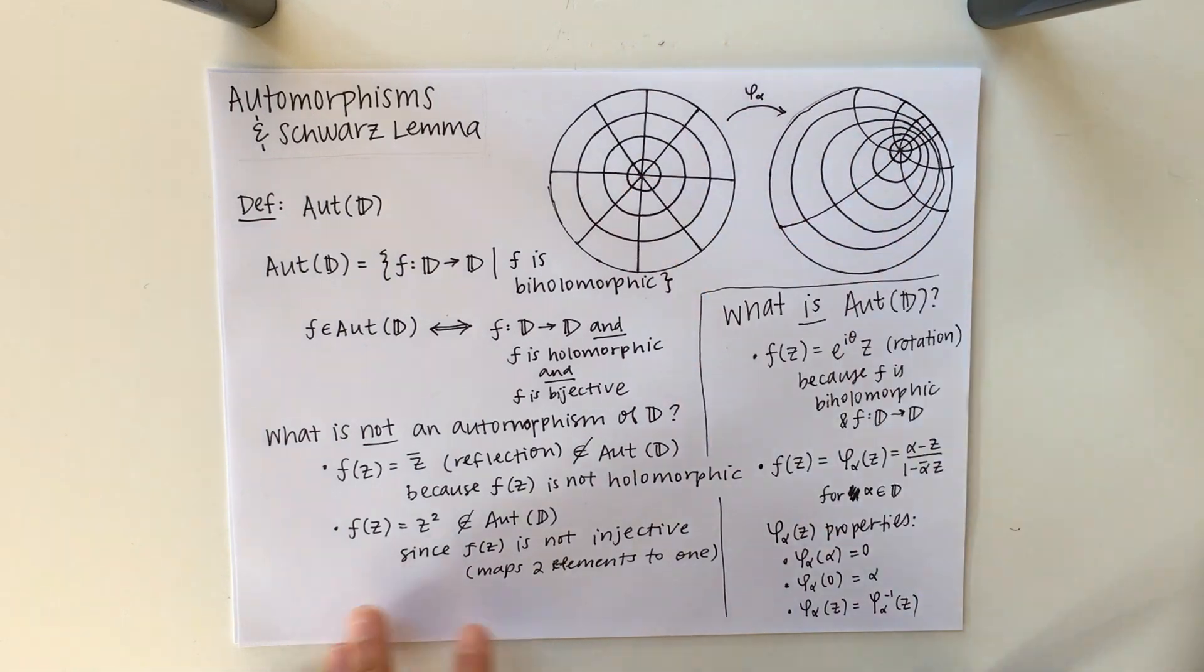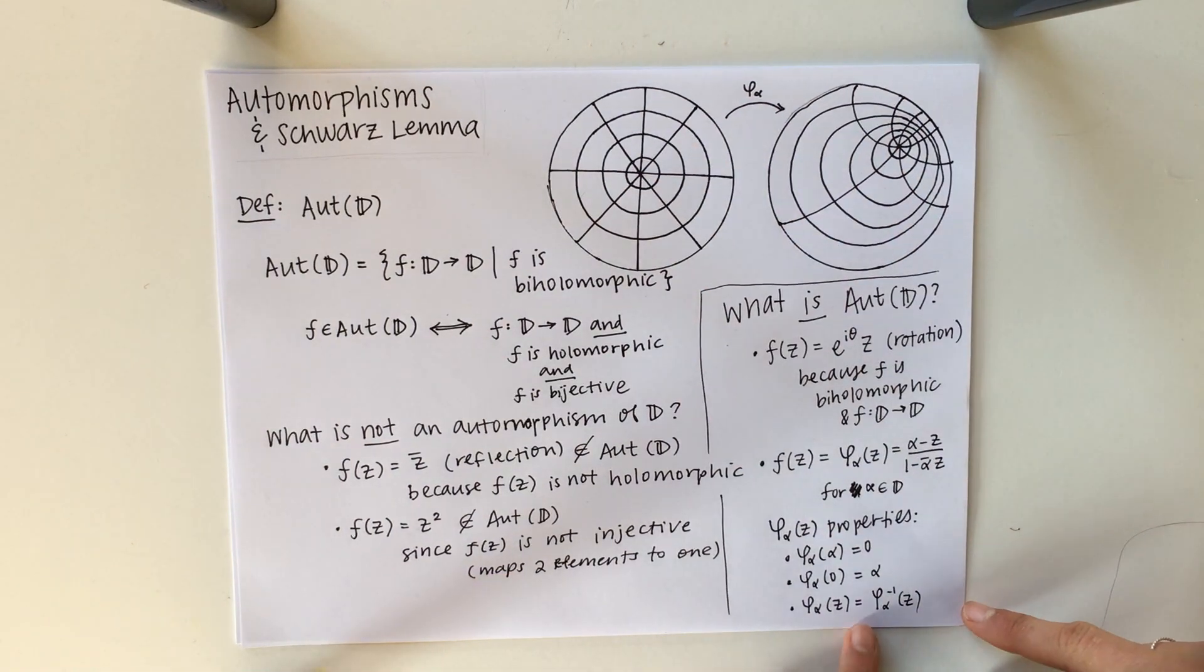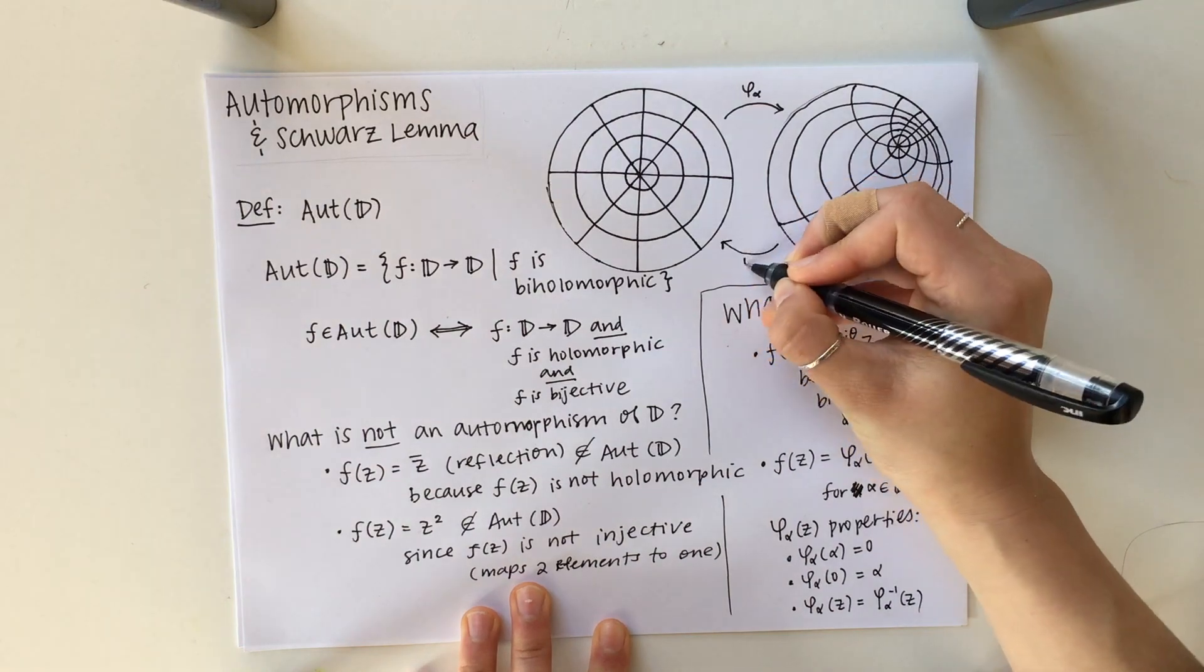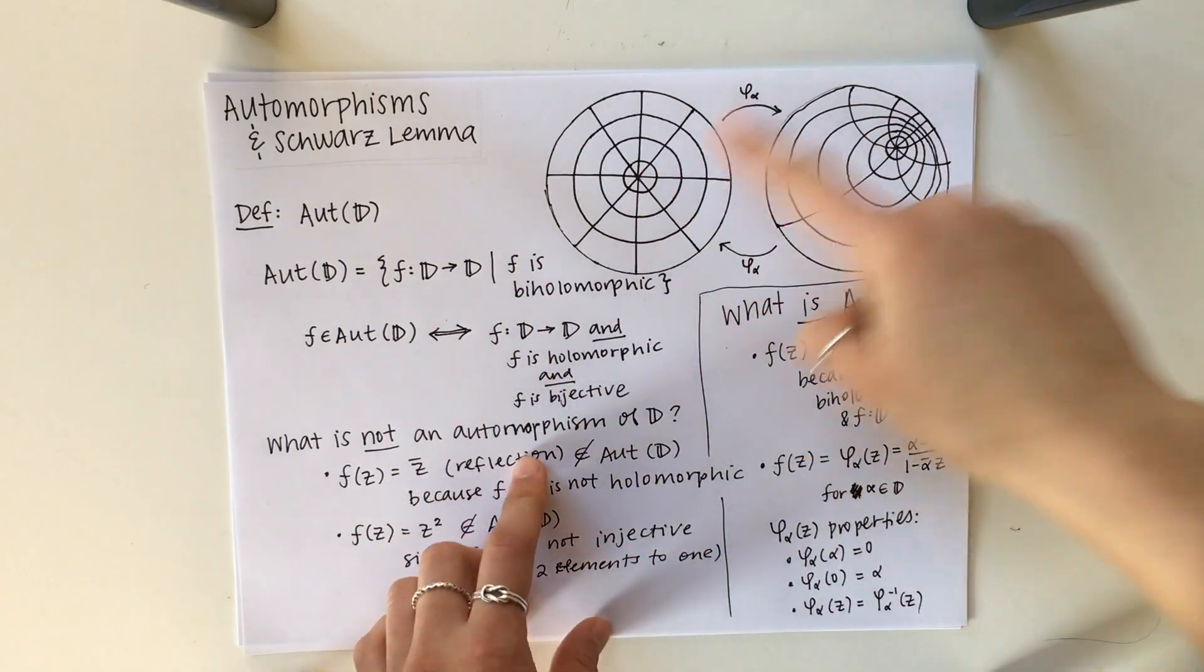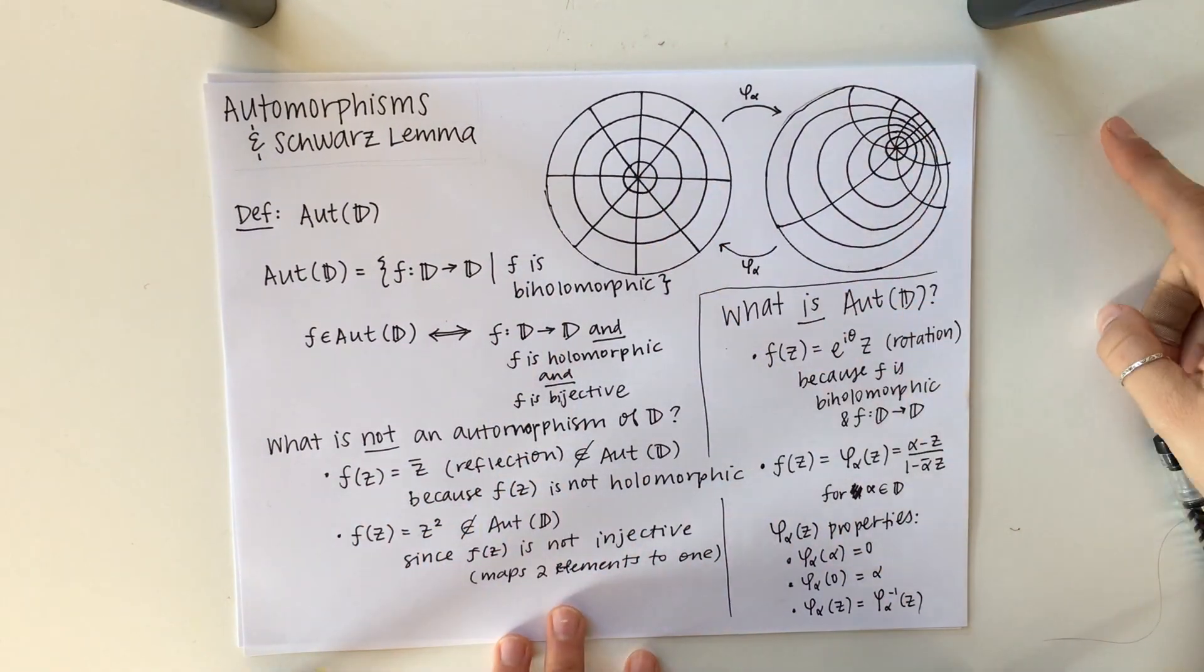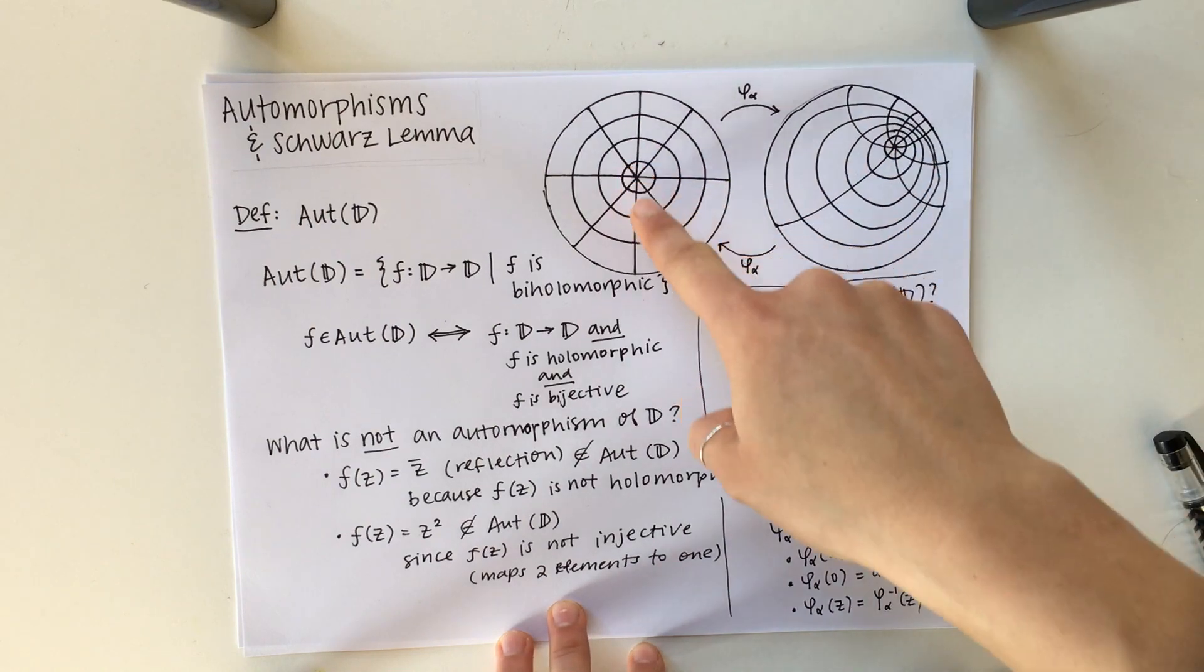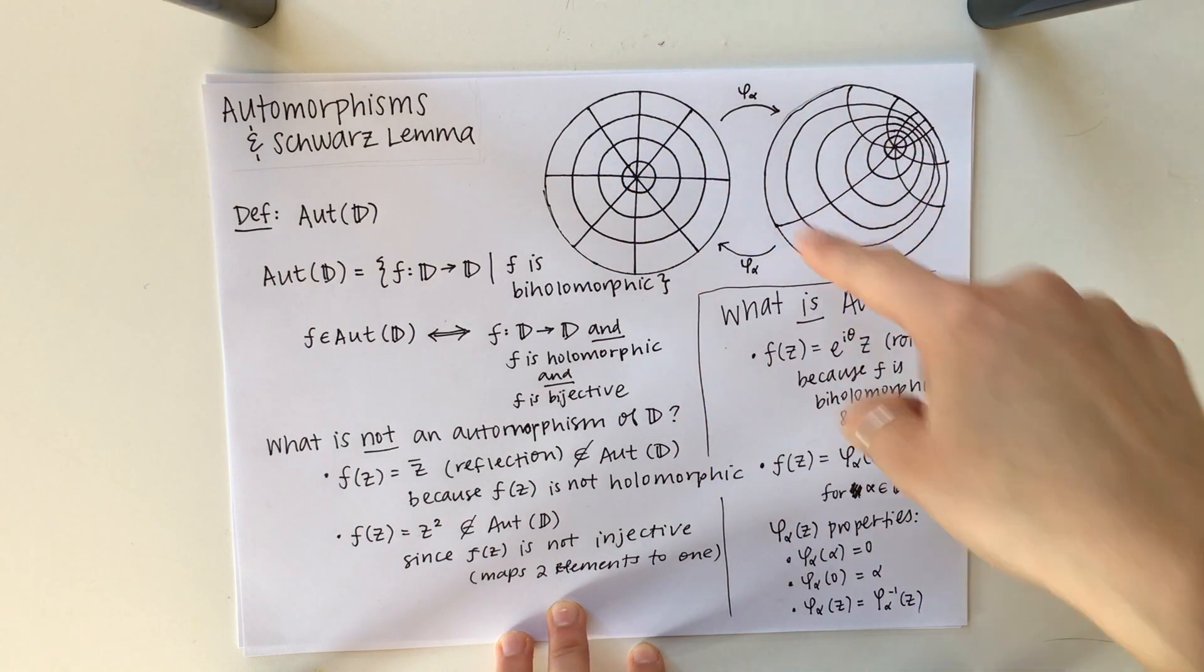The picture I drew above shows how this function phi sub alpha maps the unit disk to itself. Notice that you start at the center and you end up at this point A, and that's why phi sub alpha maps zero to A and back to itself. I can actually show that the inverse, since it's equal to itself, you can draw an arrow back and say that it maps back and forth from the unit disk to the unit disk and then back to the original unit disk it started with.